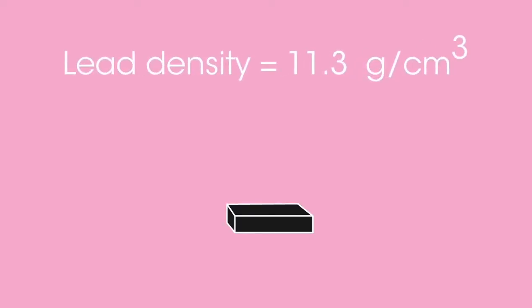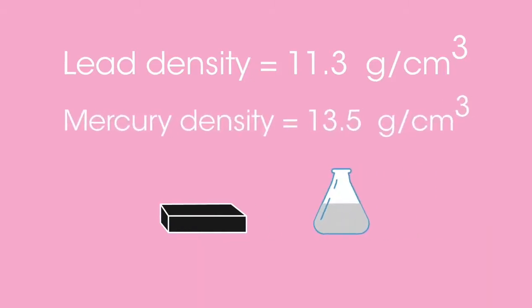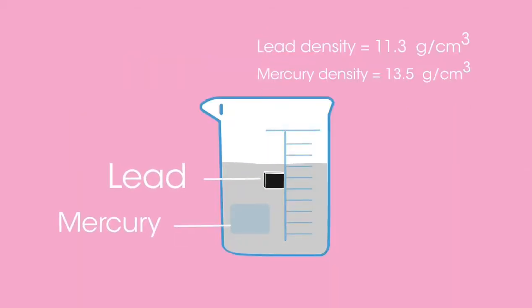Lead has a density of 11.3g per cm³ and liquid mercury has a density of 13.5g per cm³. What would happen if a block of lead were placed in a beaker of liquid mercury? Pause the video while you think. The lead would float in the liquid mercury.